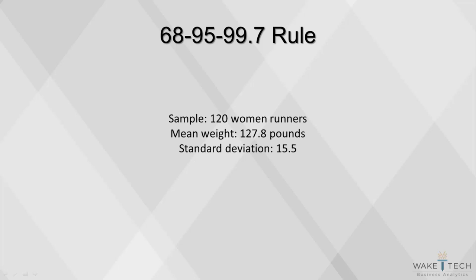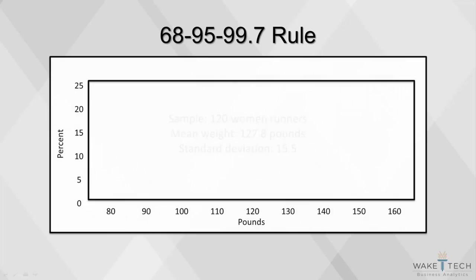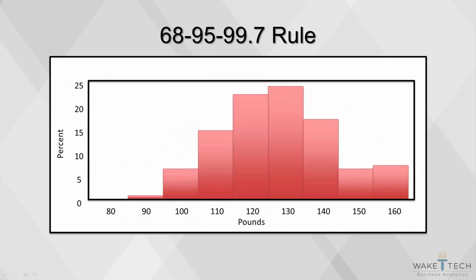Here's our data. The mean of the weight of 120 women runners in a sample is 127.8 pounds. The standard deviation is 15.5. Here's what our distribution would look like. Let's look a little more closely at that distribution.